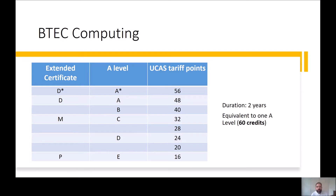It's a two year course and is equivalent in size to one A Level, which is worth 60 credits. On this table you can see how the grading system for the extended certificate — which is Pass, Merit, Distinction and Distinction Star — equates to the A Level grades and how they equate to UCAS tariff points. Therefore, a Distinction Star is equivalent to an A Star A Level: 56 UCAS points, and so on and so forth.